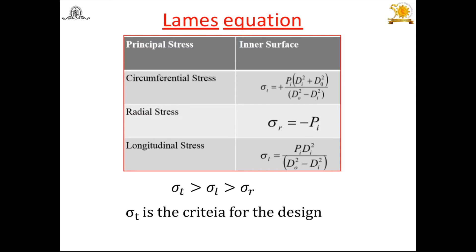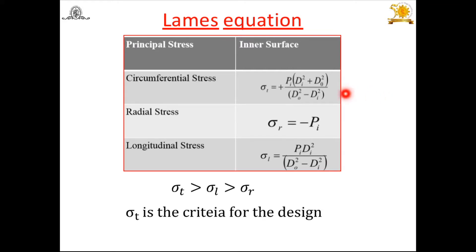According to the maximum principal stress theory, the maximum principal stress is equal to the permissible stress of the material. The principal stresses are sigma 1, sigma 2, and sigma 3. At the inner surface, the circumferential stress sigma_t, radial stress sigma_r = -Pi, and longitudinal stress sigma_l are induced. Comparing these, sigma_t is the maximum stress in a thick cylinder. Therefore, sigma_t is the design criterion.